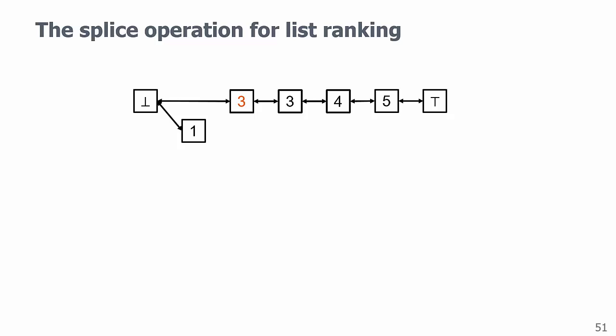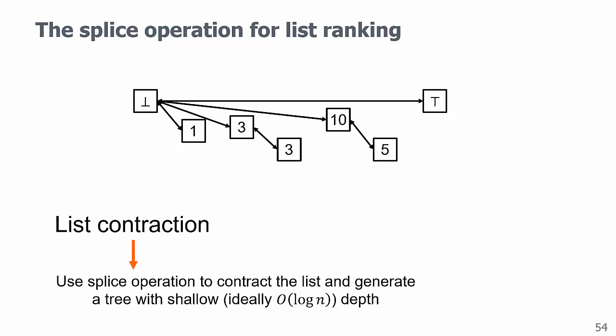Splice can be applied in parallel like this, but no two consecutive nodes can be processed together. And we can process the next and the next until the list is empty. And this step is called list contraction, which uses the splice operation to contract the list and generate a tree with shallow depth. Then we can propagate the values back. Since the tree is shallow, this step referred to as the reconstruction is trivial.